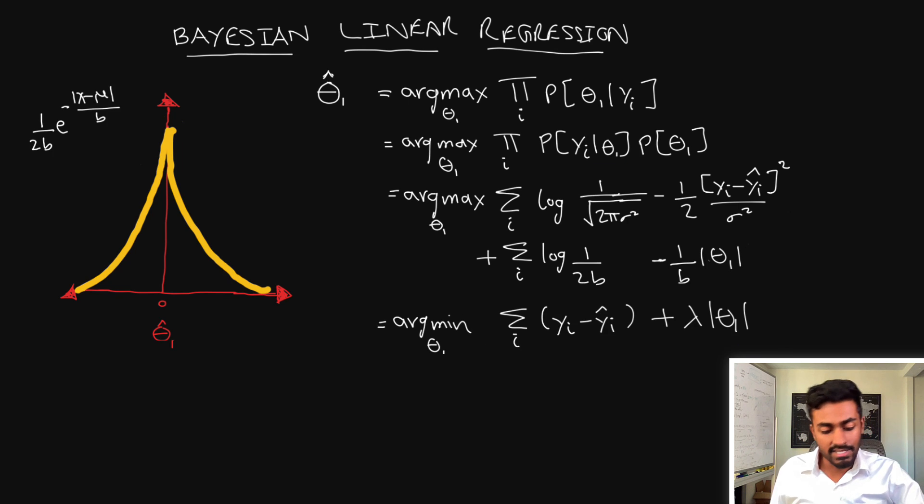And if you do a simplification here you'll see you'll actually land at the same ridge regression formulation. Now with lasso it's almost exactly the same steps that we do. The only difference is the prior that we're considering. In this case we are considering a double exponential prior for how we think the distribution of our theta one is.